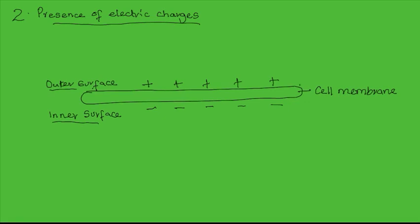This type of membrane is said to be polarized — the outside has a positive charge relative to the inner surface. The presence of these charges determines which substances will move in or out and also at what rate.